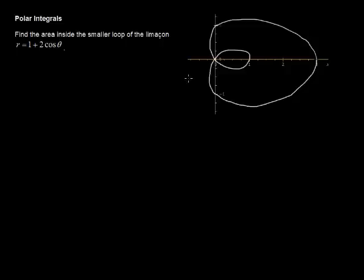In this video, I'll use polar integrals to find the area inside a curve. Find the area inside the smaller loop of the limaçon r = 1 + 2cos(θ).